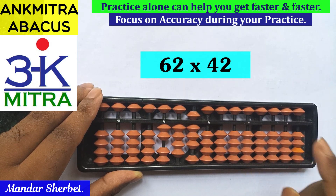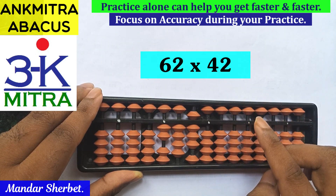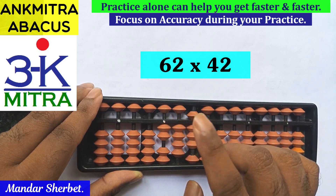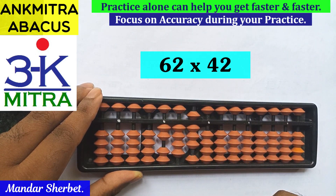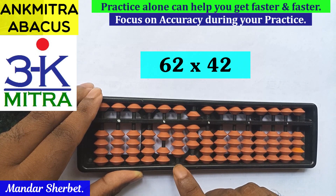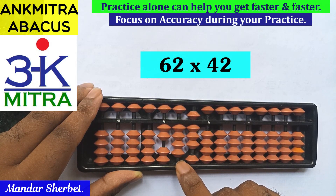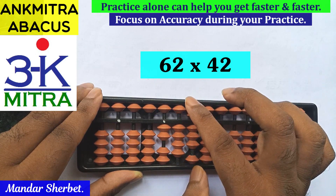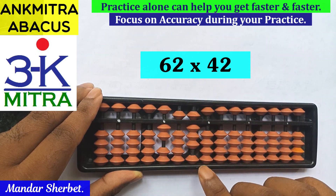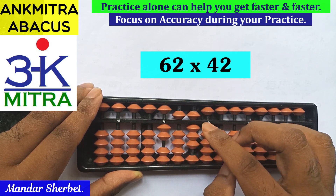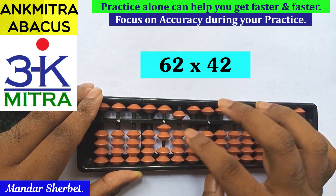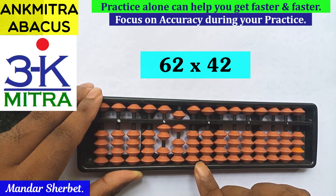Our first part of the calculation is done. Now we'll use the units place digit of the multiplier, which is 2, and multiply it with each digit of the multiplicand. So 2 multiplied by 6 is our next step, starting from the third rod. 2 multiplied by 6 is 12, so I will add 12 from this rod — 1 on this rod, and 2 will be added on the next rod using the big friend formula: minus 8 plus 10.